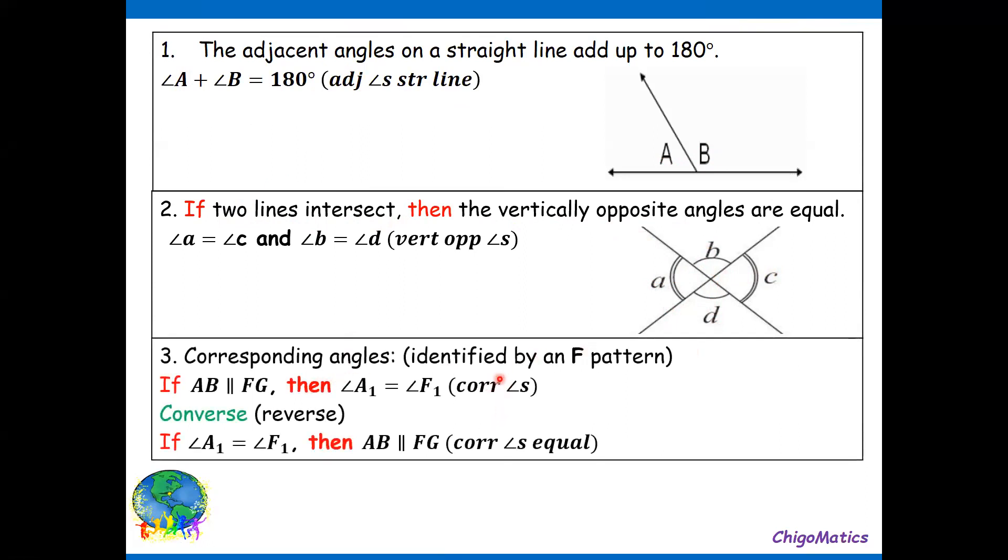Corresponding angles, normally identified by an F pattern. We are saying, if you have your two lines that are parallel, this is the F pattern, that angle C is equal to angle D. So if AB is parallel to FG, then angle A1 is equal to angle F1. The converse is, if angle A1 is equal to angle F1, then AB is parallel to FG.